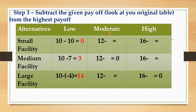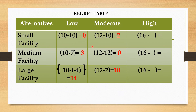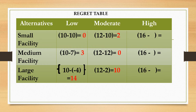For the 'Moderate' column, we repeat the same process: highest is 12, written as 12, 12, and 12. We subtract the original payoff amounts from 12. For the 'High' column, the highest is 16, written as 16, 16, and 16. Subtract the original payoffs that correspond to 'High' demand from 16 — complete this column now.